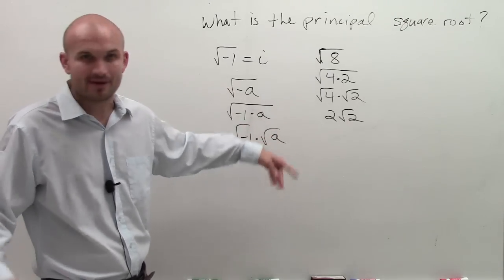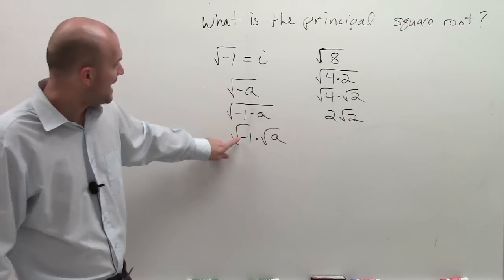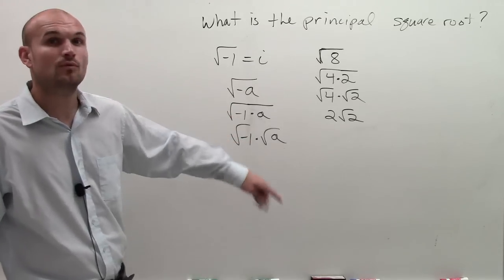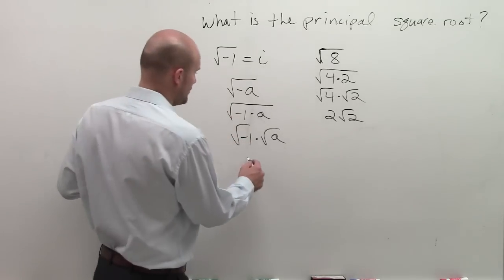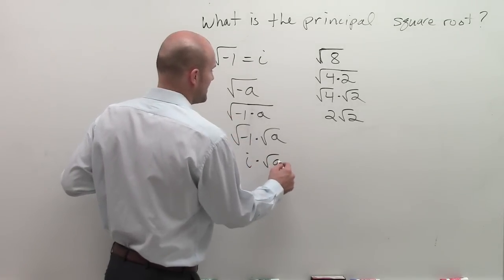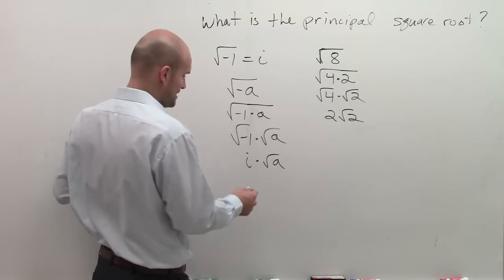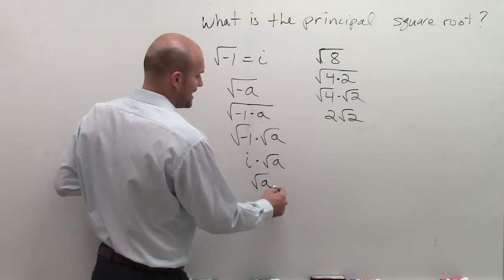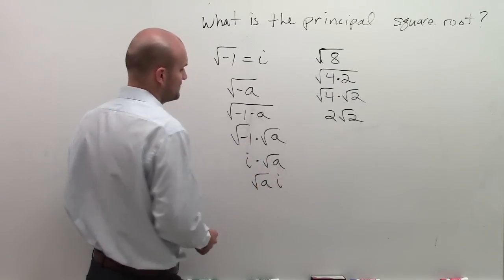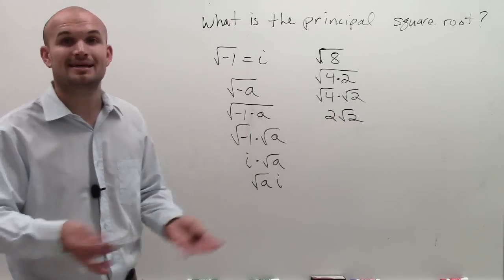Because if I factor out that negative 1, now I can simplify this, evaluate it, whatever you need to do. And then I can rewrite the square root of negative 1 is i. So we can write i times the square root of a, or we prefer actually in mathematics to write the square root of a times i. So whatever the square root of a is, it could be anything.